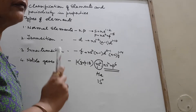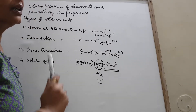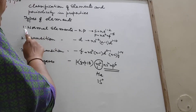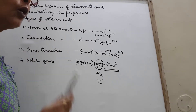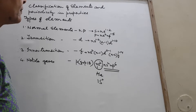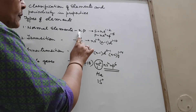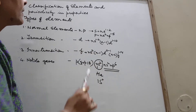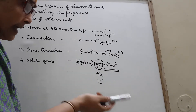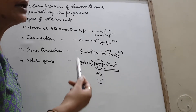Normal elements are those elements which have only the outermost shell — the ultimate shell or the valence shell — incomplete. They all belong to S block and P block. S block means those elements which have the last electron entering the S subshell; P block means those elements which have the last electron entering the P subshell.